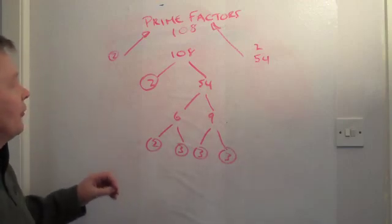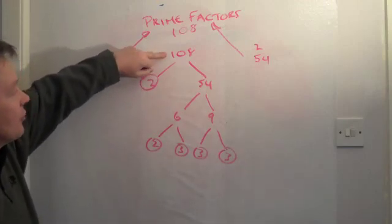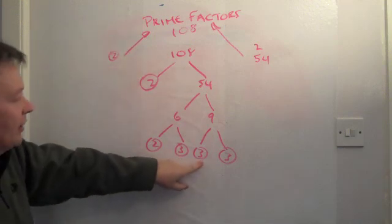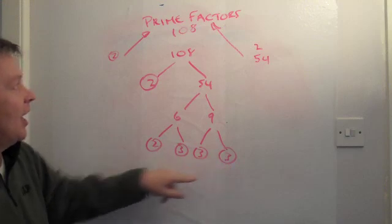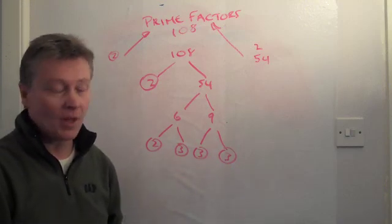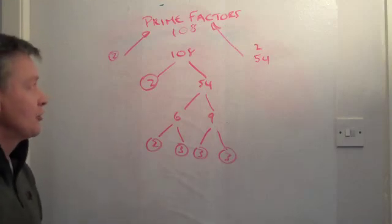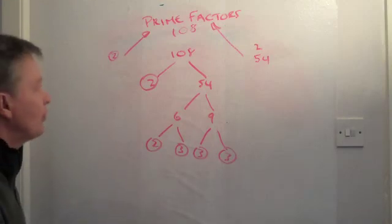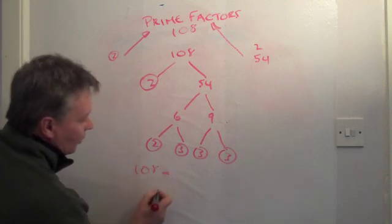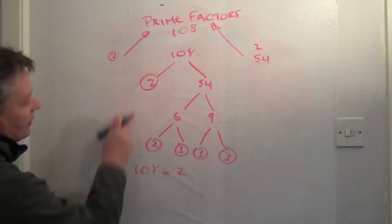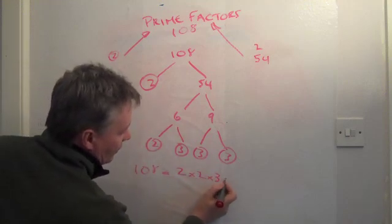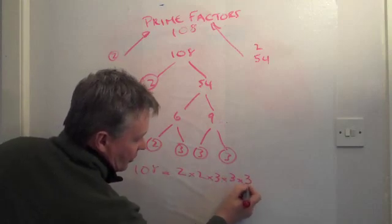So I'm in a situation now that for the number 108, I've worked out that 2, 2, 3, 3, and 3 are all the prime factors of 108. So where the question says express 108 as a product of its prime factors, what they mean is they want you to write 108 equals 2 times 2 times 3 times 3 times 3.